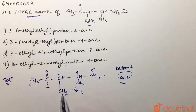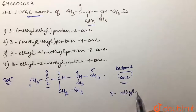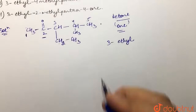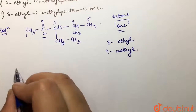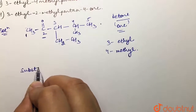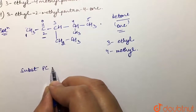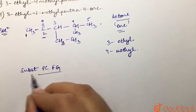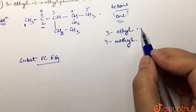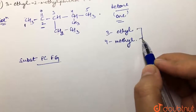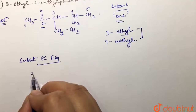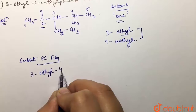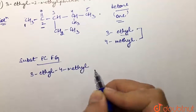At second position we have the ketonic group. At third position we have an ethyl group (C2H5). At fourth position we have a methyl group (CH3). In the IUPAC name, we first write substituents alphabetically before the parent chain with the primary functional group.